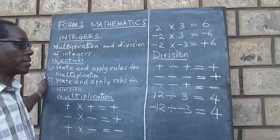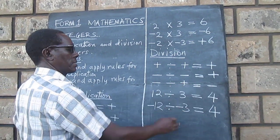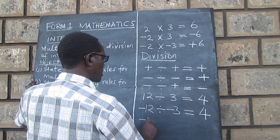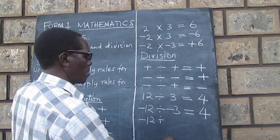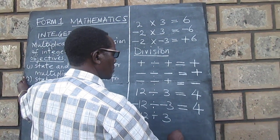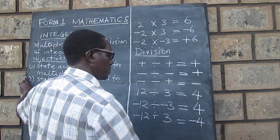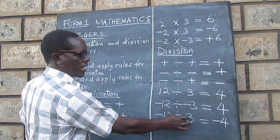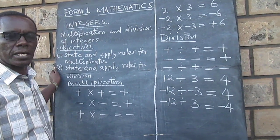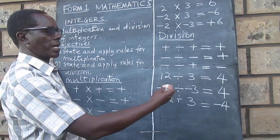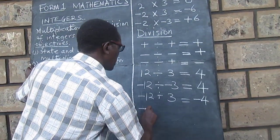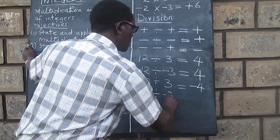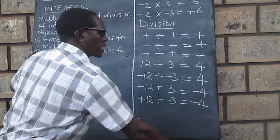And finally, if the signs are different — for example, negative 12 divided by positive 3 — the result would be negative 4. And even if the negative was on the 3 instead, positive 12 divided by negative 3 would still give us negative 4.